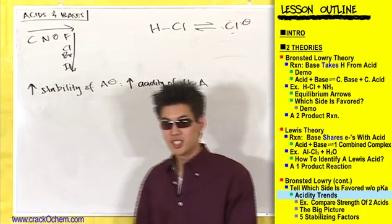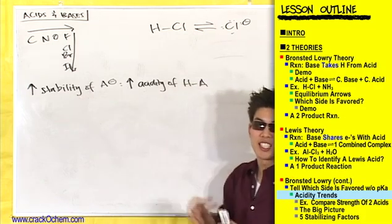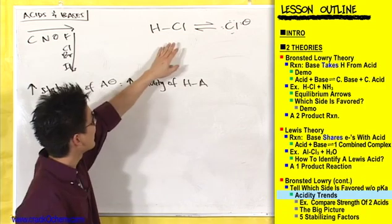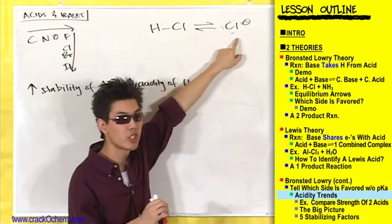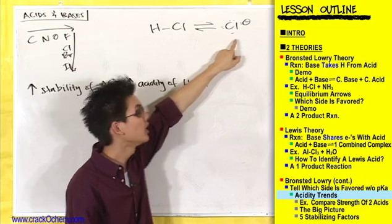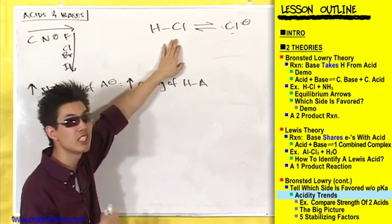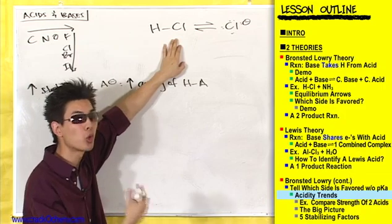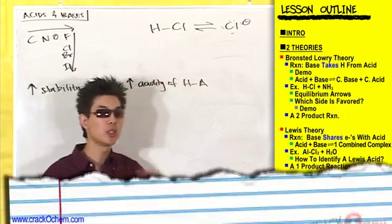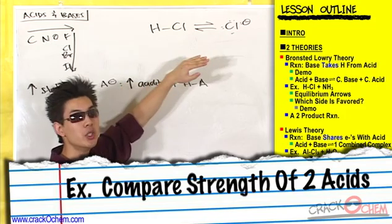As you increase the stability of your conjugate base, you increase the acidity of HA. If you increase the stability of your conjugate base - Cl minus in this example - you are increasing the acidity of your acid, increasing the strength of your acid. It's going to be more willing to give up that hydrogen. And this really means nothing until you compare one acid to another acid.